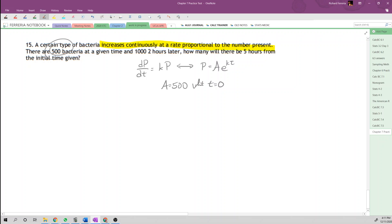Two hours later, we have 1000. So we can say P(2) is 1000, and that's going to be equal to 500 times e to the 2k.